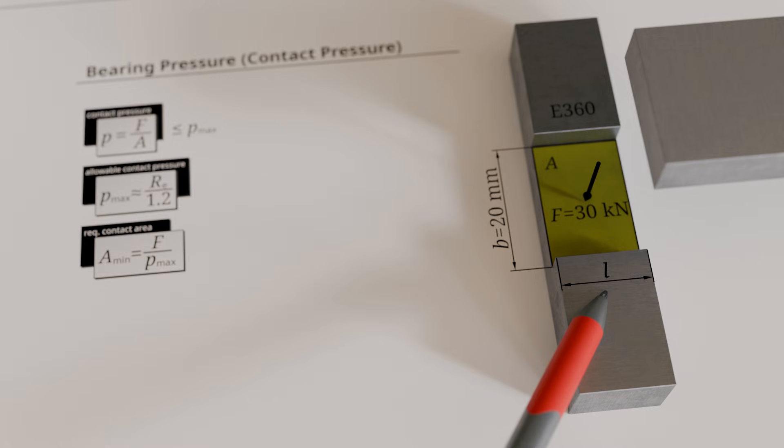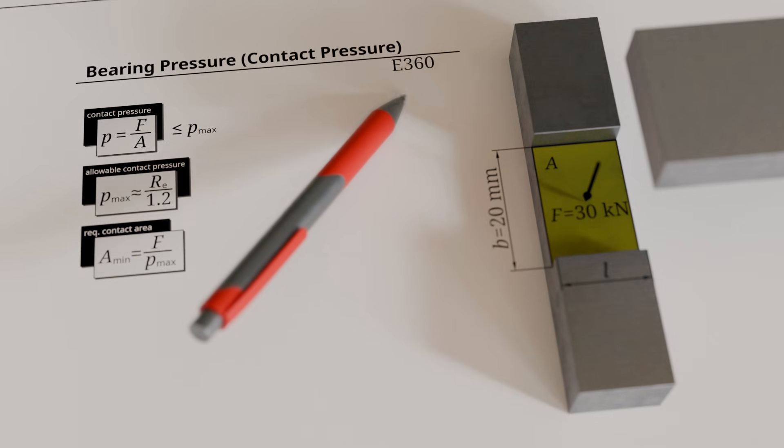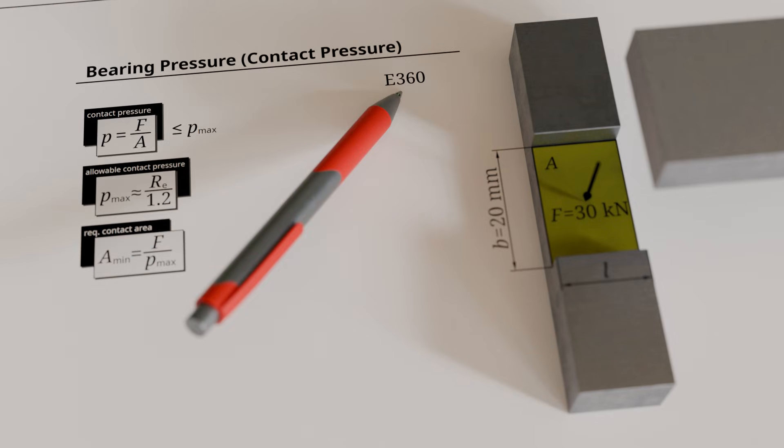First, we need the material's yield strength to estimate the allowable bearing pressure. The yield strength is taken from the steel designation E360. The number 360 represents the yield strength of 360 newtons per square millimeter.